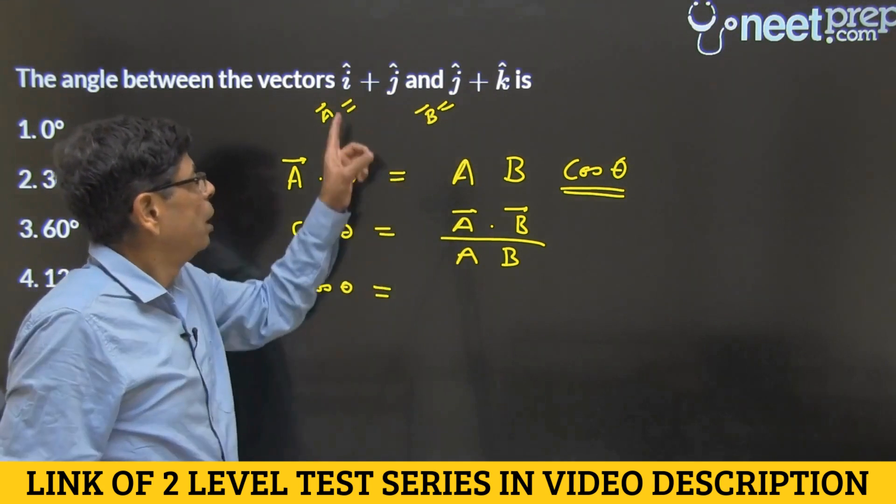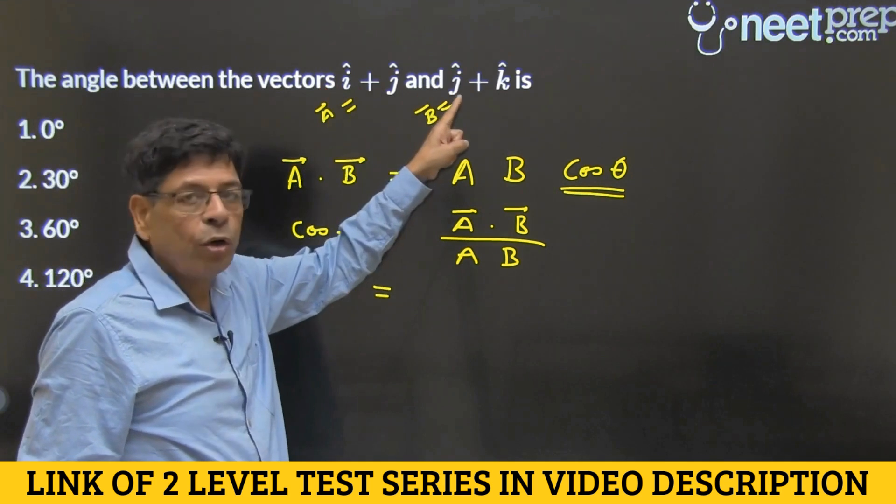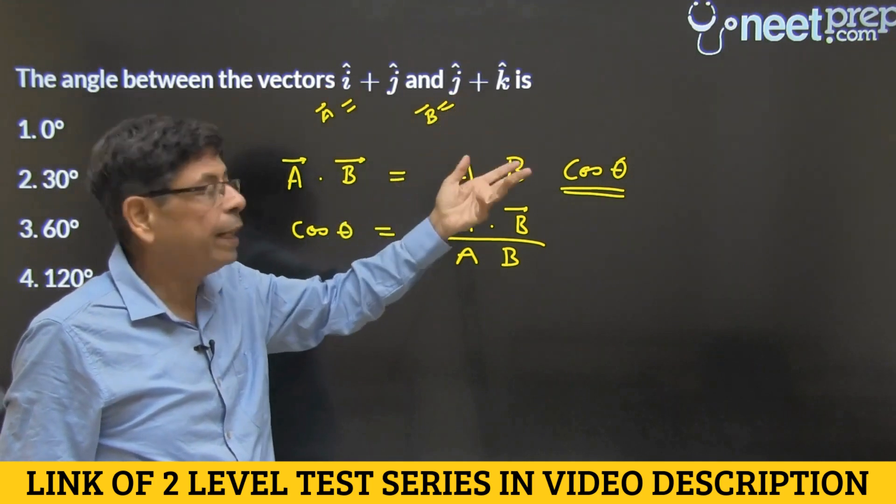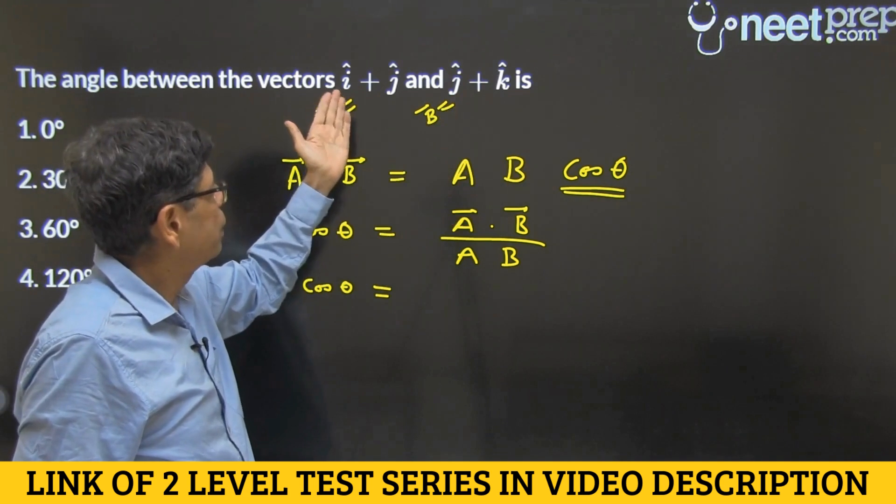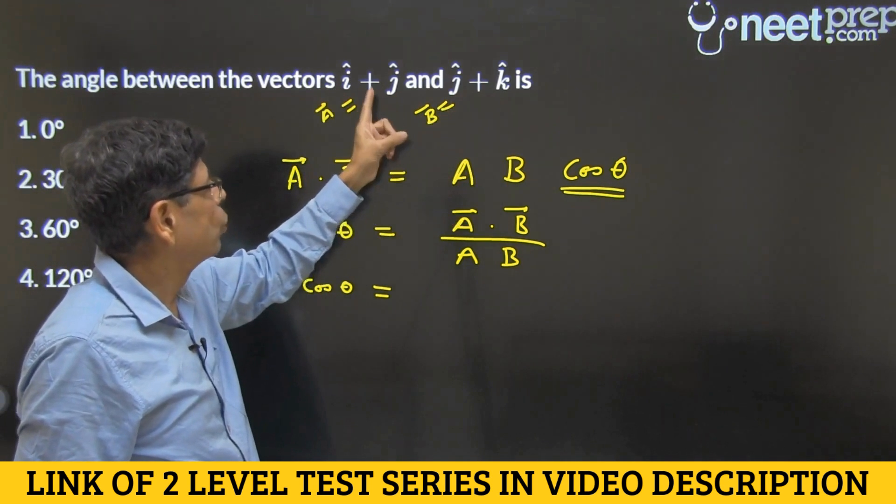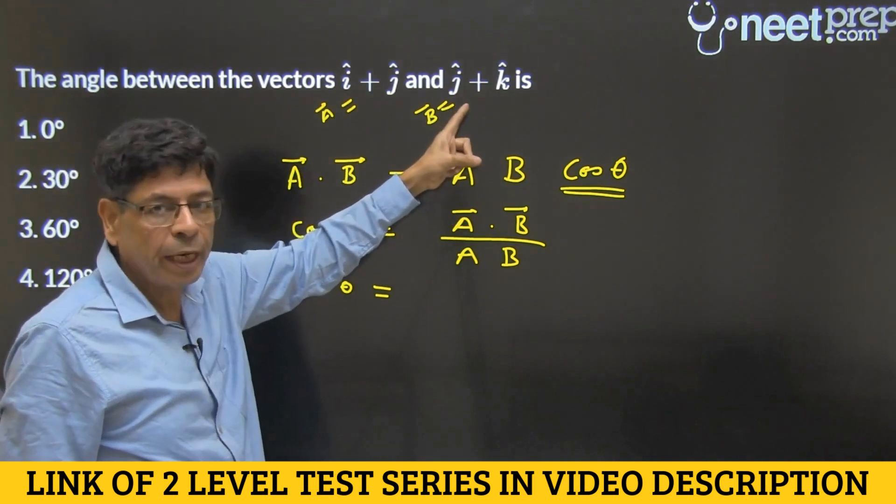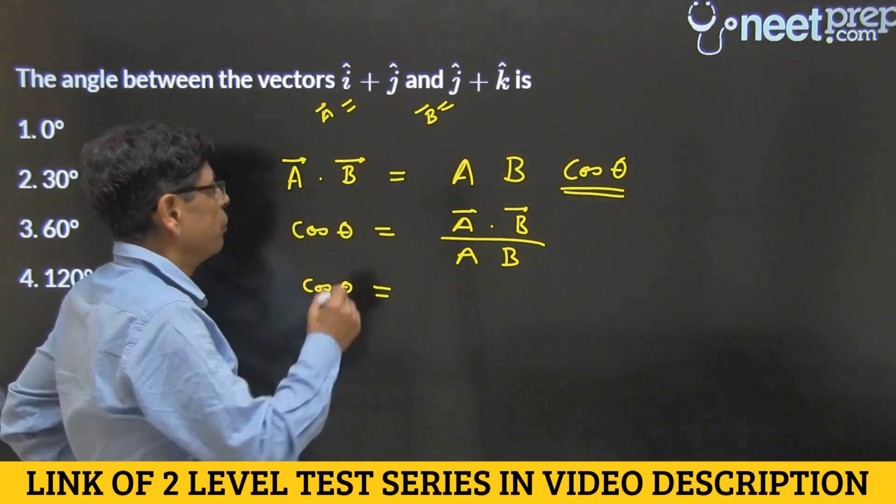In the dot product, you know that something like i dot j, dissimilar ones, they vanish because they end up as zero, and only similar ones will survive. The only similar one is j dot j and when it survives, its value is one.